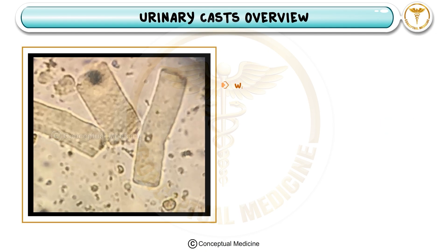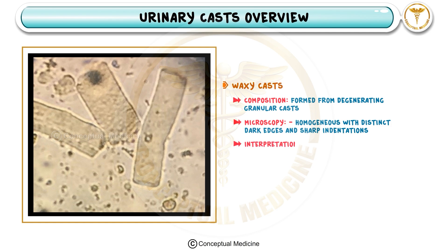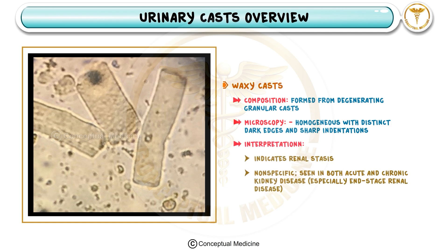Waxy casts are another important type, formed from the degeneration of granular casts. They have a homogeneous appearance with sharp edges and dark borders under the microscope. Waxy casts are typically seen in chronic kidney disease, especially in end-stage renal disease, and indicate long-standing tubular damage.